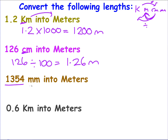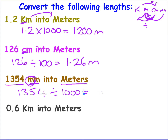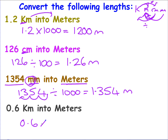I've got 1,354 millimetres — a small unit converting to a bigger unit, so I divide. The prefix milli means a thousand — remember our millipede — so I divide by 1000 and get 1.354 metres. Finally, converting kilometres into metres: big unit to a smaller unit, so I multiply. Kilo means a thousand, giving me 600 metres.